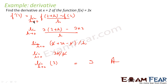Very simple. We were supposed to find the derivative of f(x) at x=2, that is f'(2). f'(2) is nothing but the limit of f(2+h) minus f(2) by h. We had this formula, and we solved it to get the value 3.